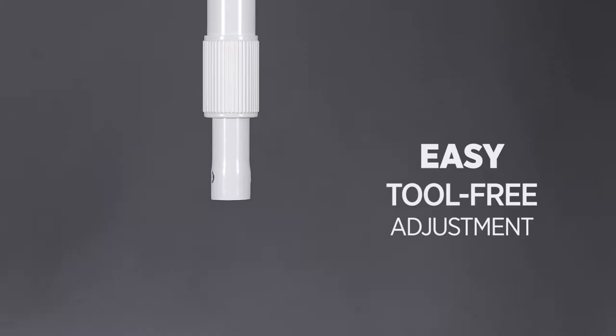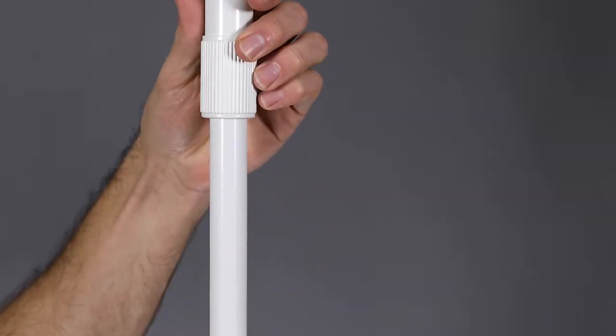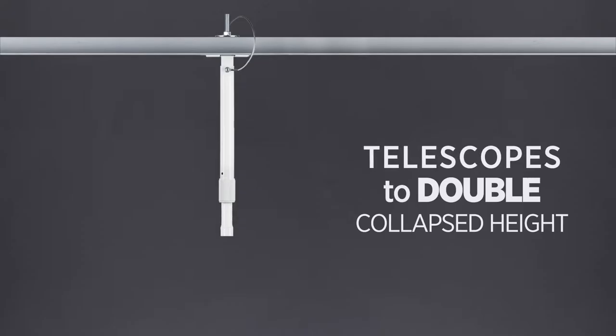Achieving the proper installation height is easy. Simply loosen the twist lock collar and slide the pole up or down to the desired height, then twist the collar to lock in place. Each pole telescopes to nearly double its collapsed height.